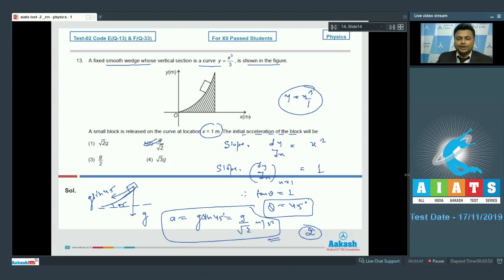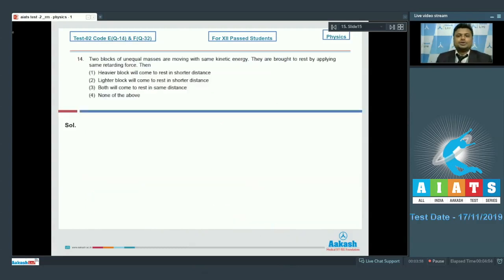Moving on to the next question, that is 14. Here is question number 14. Two blocks of unequal masses are moving with same kinetic energy. They are brought to rest by applying same retarding force. Then we have to consider four options and we have to pick the correct one.